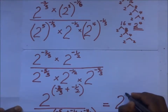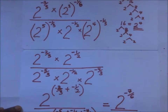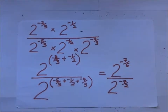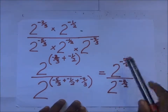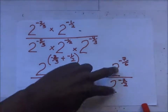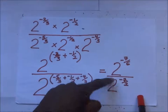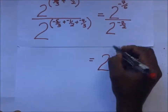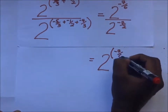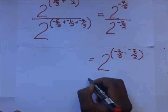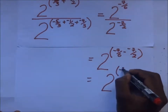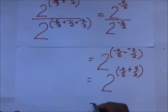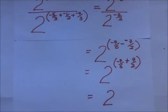The numerator is 2 to the power negative 7 over 6. The denominator is 2 to the power negative 7 over 2. This is division of indices with the same base, so we maintain the base and subtract the powers: negative 7 over 6 minus negative 7 over 2. The minus-minus becomes a positive, so it's negative 7 over 6 plus 7 over 2, and our answer is 2 to the power 7 over 3.